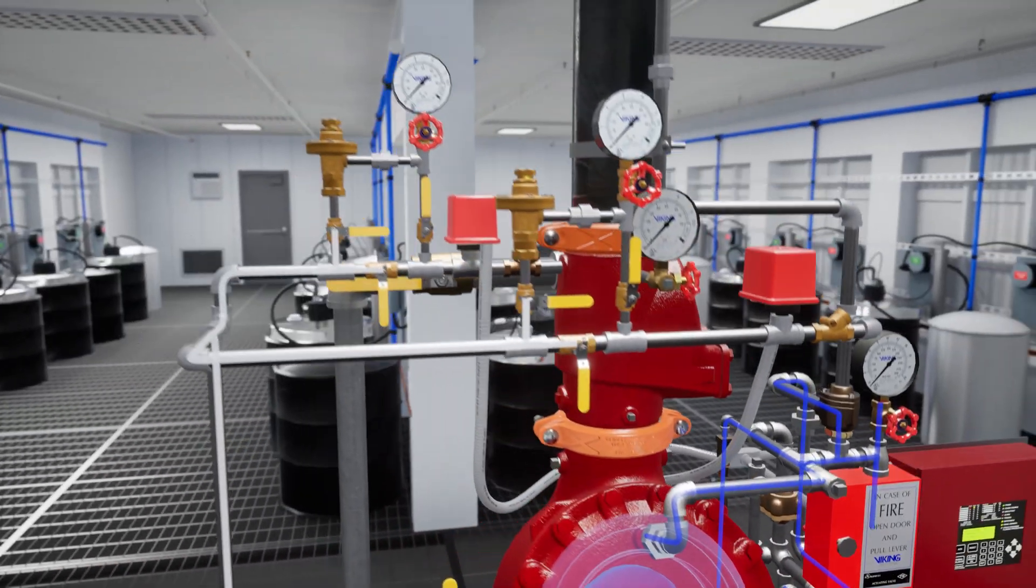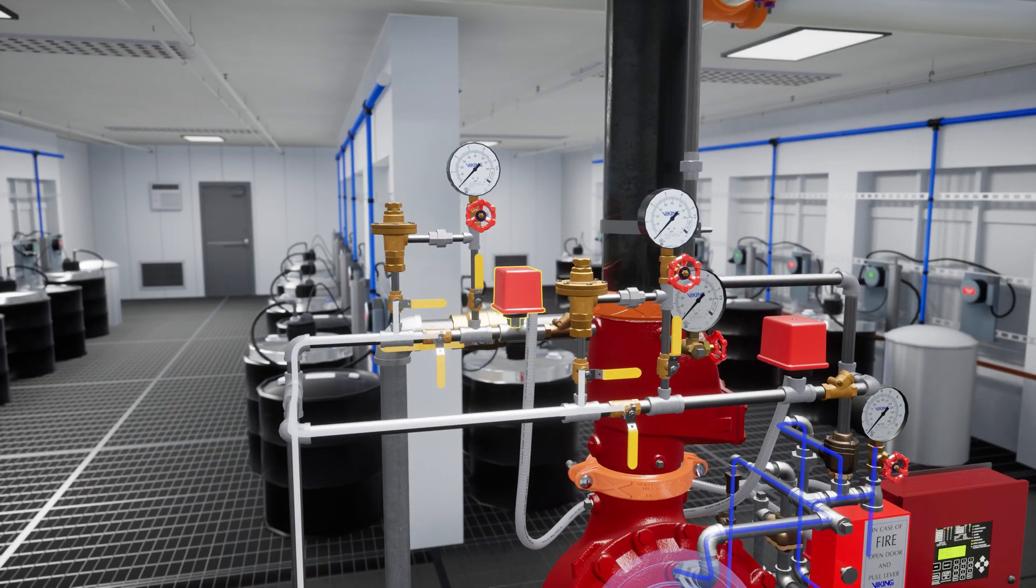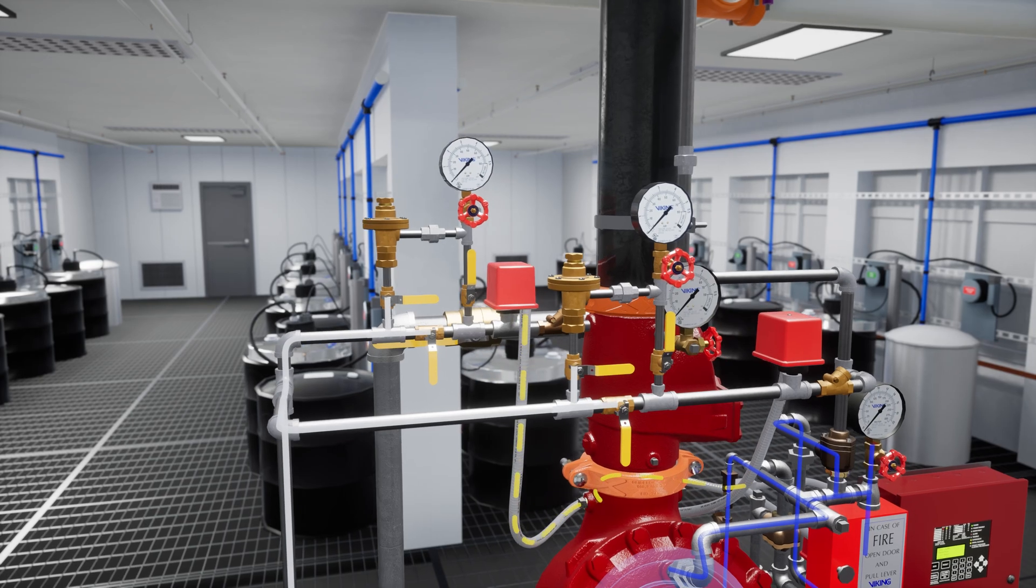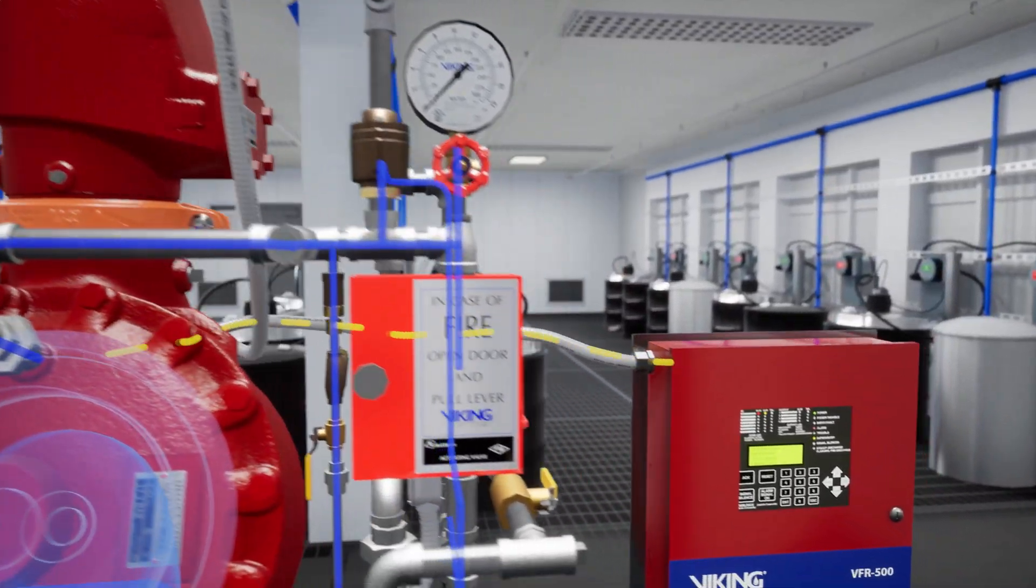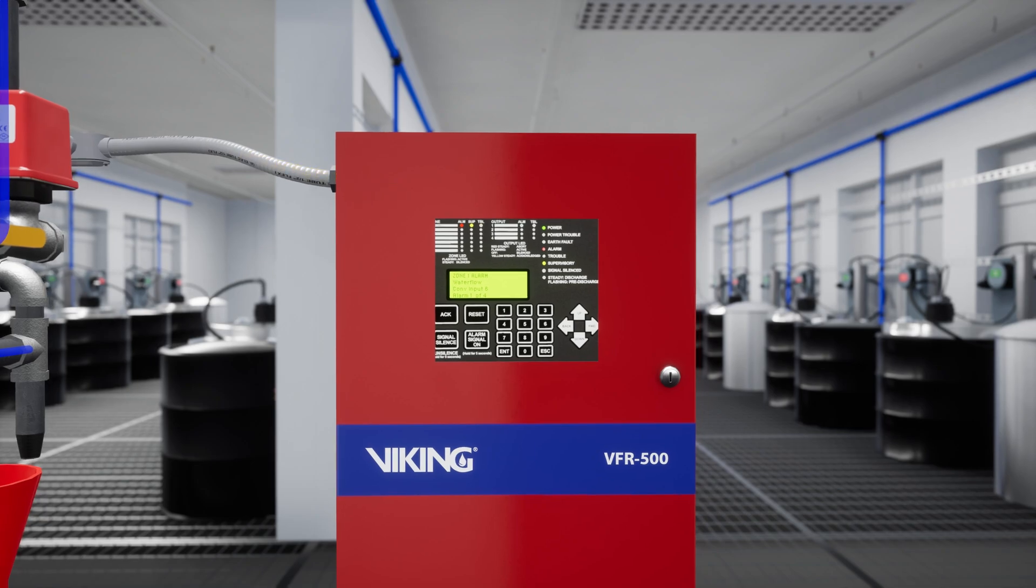After the air pressure is released, the PS40 will send a signal to the VFR 500 and the panel's buzzer will reactivate. This isn't required, but we are going to silence the panel once again. Press the silence button on the VFR 500 release control panel.